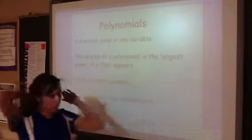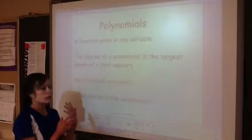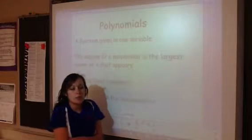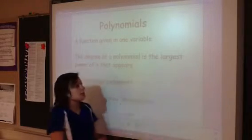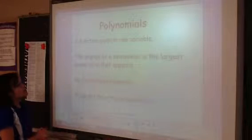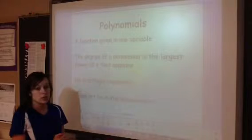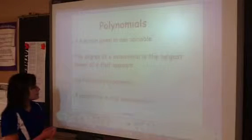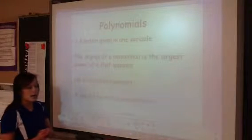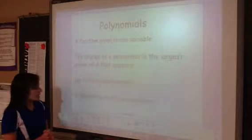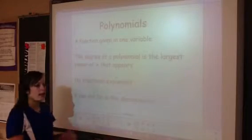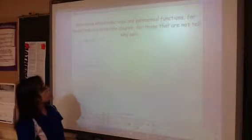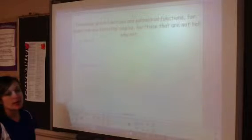The next part of the chapter is dealing with polynomials — we're going to go a little bit away from quadratics and deal with polynomial functions. A polynomial function is a function given in one variable, meaning y equals something in x. The degree of a polynomial is the largest power of x that appears — quadratic would be x squared, cubic would be x cubed. There are no fractional exponents, and x cannot be in the denominator, because that would make it a rational function. We are going to determine if these functions are polynomial ones, and if they are, tell the degree; if they aren't, say why not.